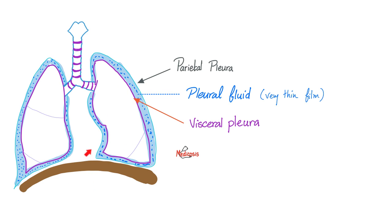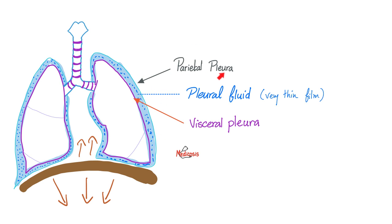The diaphragm contracts and descends downward during inspiration, expanding your lungs so you can get air in. During expiration, it relaxes and moves upward, emptying your lungs and getting air out. The lungs are surrounded by the pleura — a very thin cover, one for each lung, made of two layers. The inner layer hugging the lung is the visceral pleura. The outer layer closer to the chest wall is the parietal pleura. Between them is a teeny-tiny space filled with a thin layer of fluid known as pleural fluid.